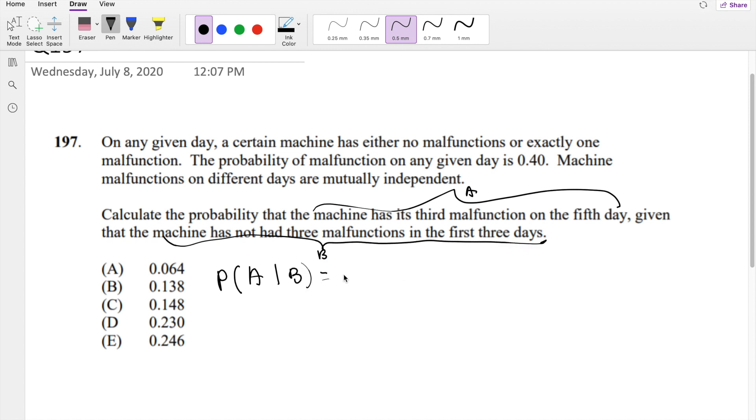Okay, so as always, this uses our conditional probability formula: probability of A and B divided by probability of B.